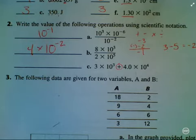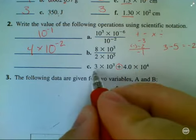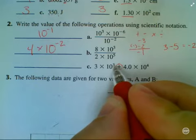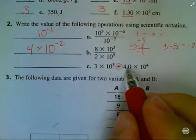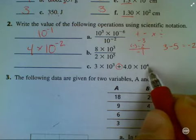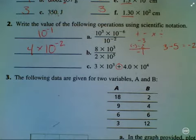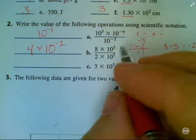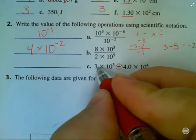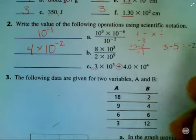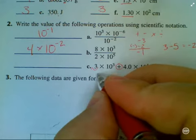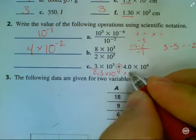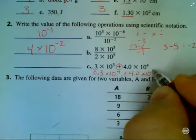You can either move the decimal in this number so that this exponent right here, this 3, becomes a 4. Or you can move the decimal in this number so that this exponent becomes a 3. Either way, it doesn't matter. We just need both of these exponents to agree. So just because I have to pick one way to do it, I'll take this decimal and move it here. And so I'll actually have 0.3 times 10 to the 4th plus 4.0 times 10 to the 4th.